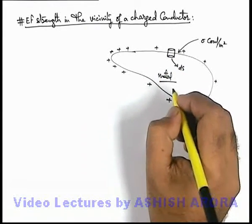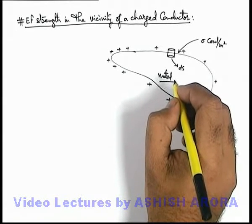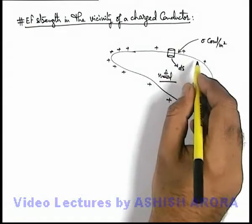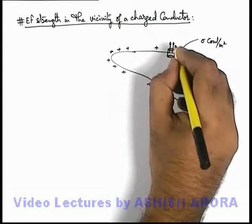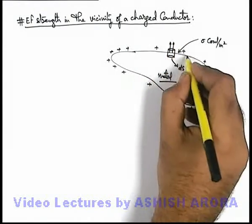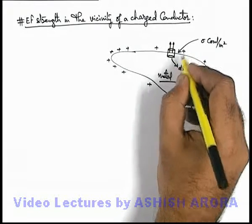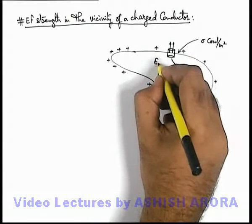Now in this situation we know that electric lines always originate in the direction normal to a metal surface. So electric field will obviously originate in outward direction from the surface as it is positively charged, and there is no electric field inside.